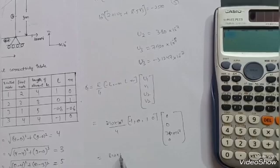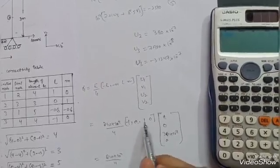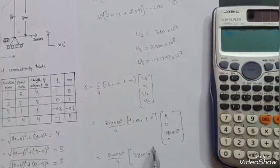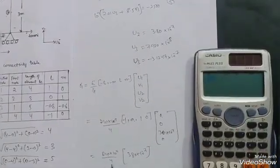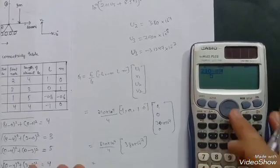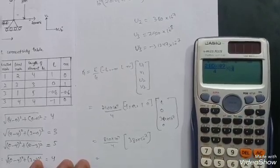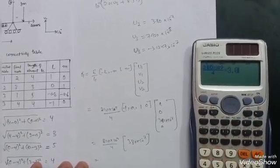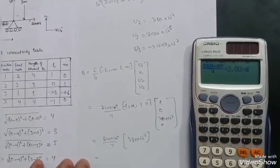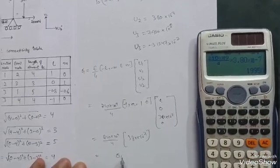Multiplying: (210×10⁹ / 4) × [0 + 0 + 1×3.80×10⁻⁷ + 0] = (210×10⁹ / 4) × 3.80×10⁻⁷ = 19,950 N/mm². So sigma 1 = 19,950 N/mm².